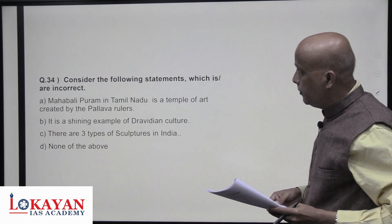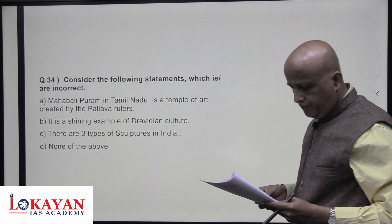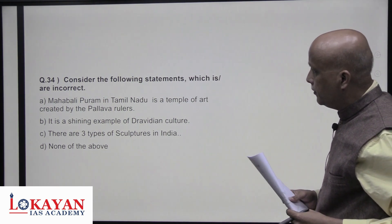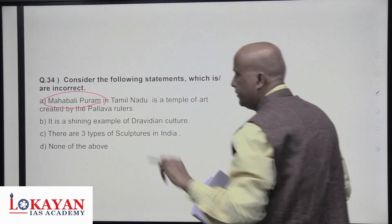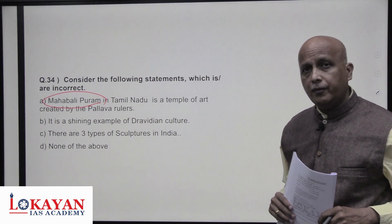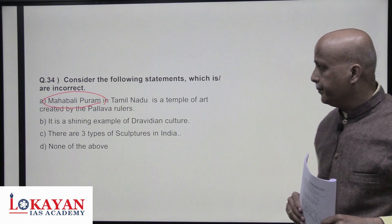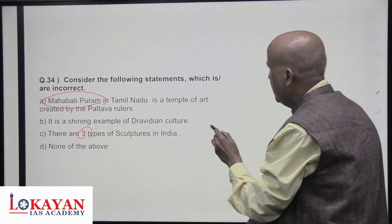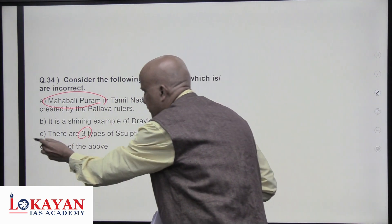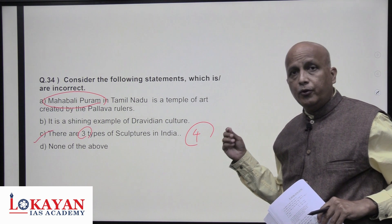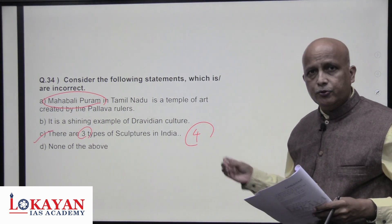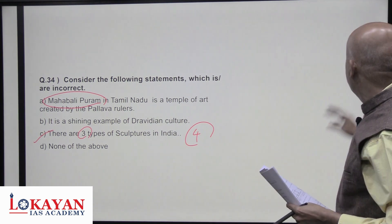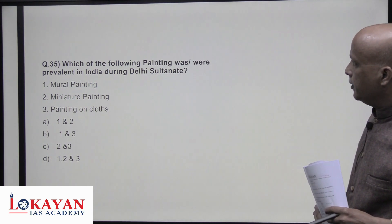Consider the following statement — which is incorrect? Mahabalipuram in Tamil Nadu is a temple art created by the Pallava rulers — a World Heritage Site and one of the best examples of early Dravidian art built by the Pallavas, especially Narasimhavarman I. Regarding types of sculptures in India: there are four main types — bronze, wooden, clay (fired), and stone — not three as stated. So the answer involves four main types.